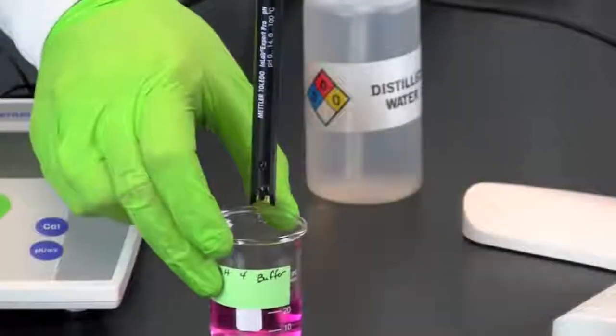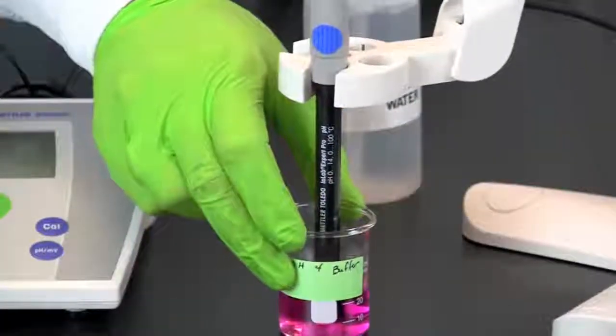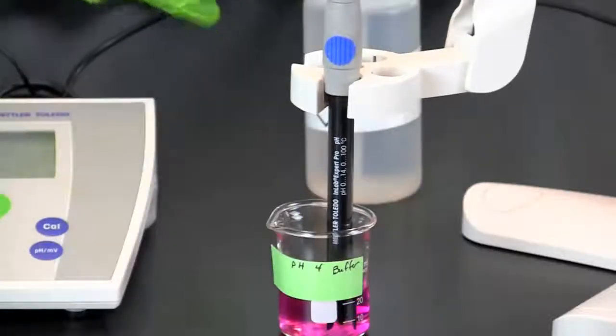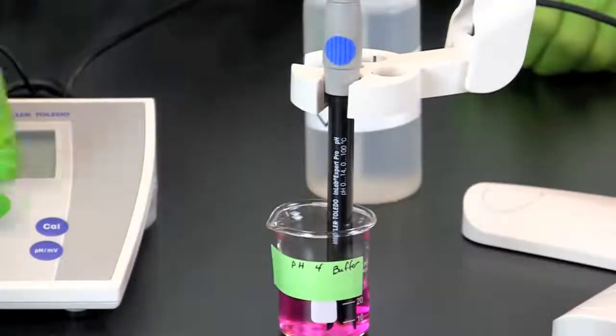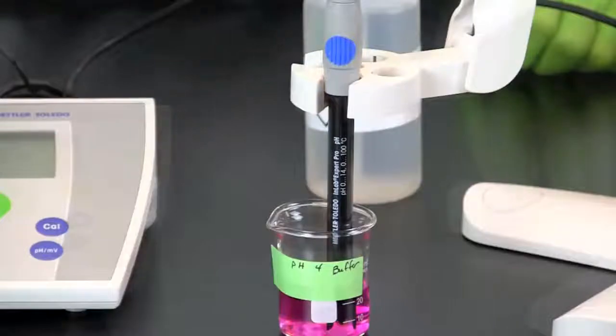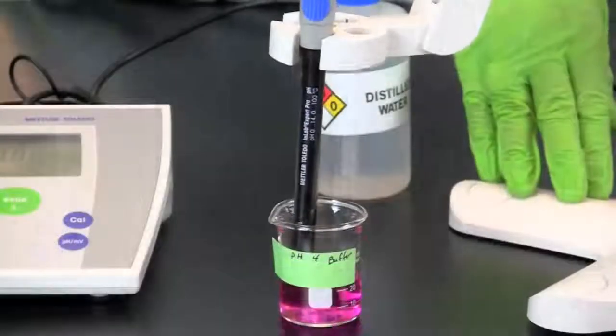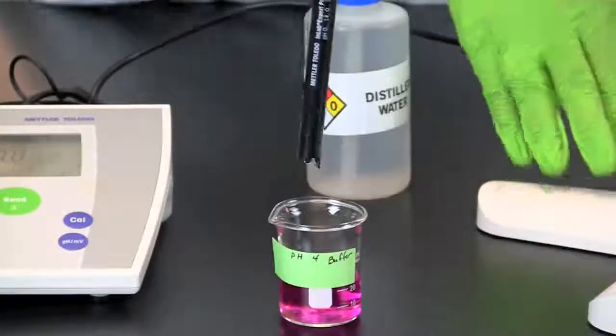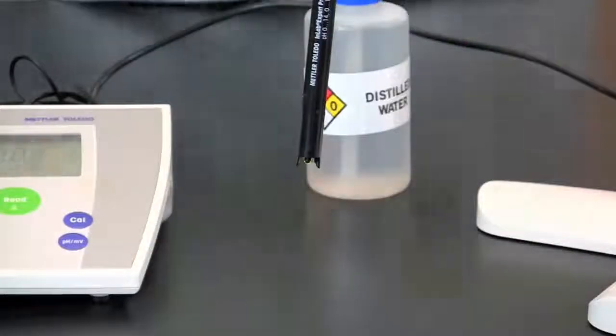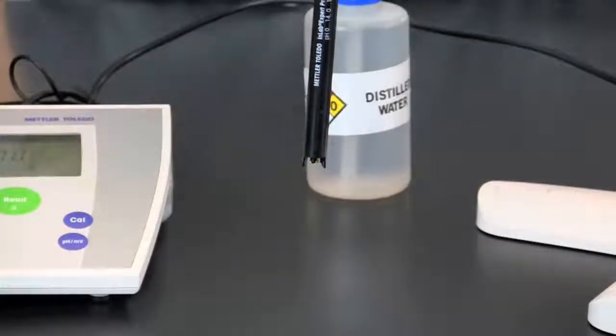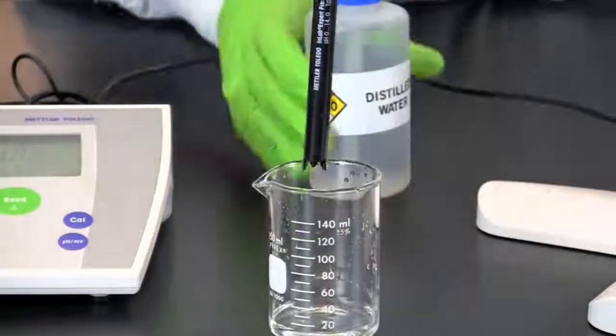Repeat the process again, this time using the standard with a pH of 4. Once the standard has been calibrated you will need to remove the sample and again rinse the electrode with distilled water.